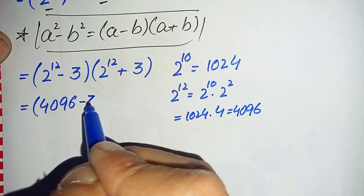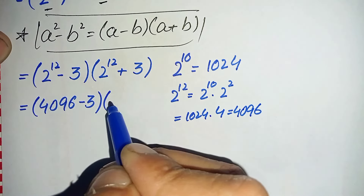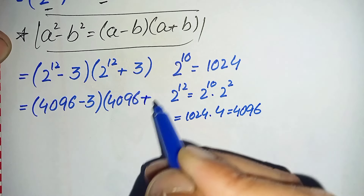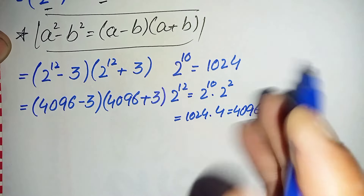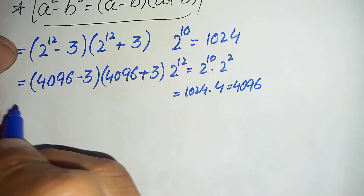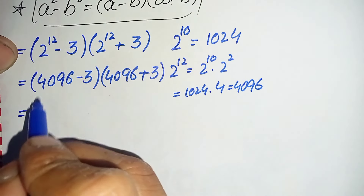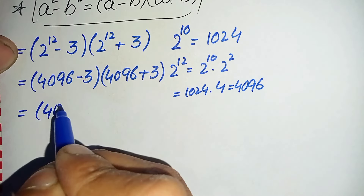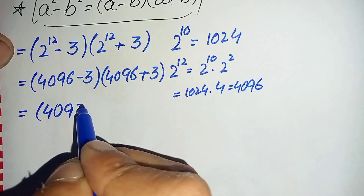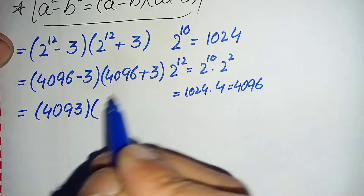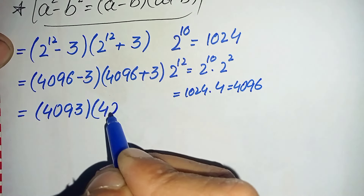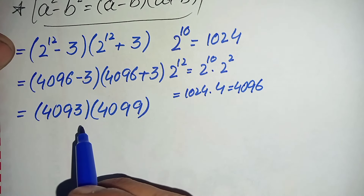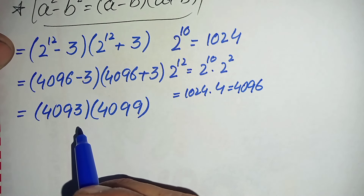So here we will replace 2 raised to power 12 with its value 4096. The expression becomes 4096 minus 3, times 4096 plus 3. By subtracting we get 4093, and by adding we get 4099. Now we will multiply these two numbers.